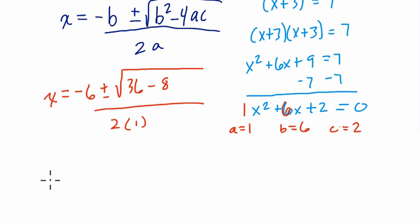Then we're going to simplify this. So x is the same thing as negative 6 plus or minus the square root of 28 over 2.